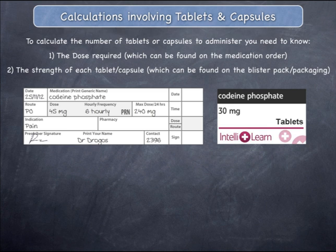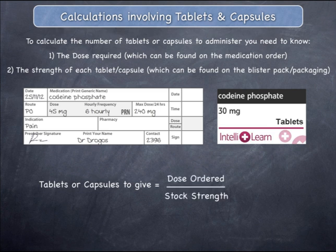The strength of each single tablet or capsule is called its stock strength. Once you have this information, the number of tablets or capsules to administer is equal to the dose that has been ordered divided by the stock strength.